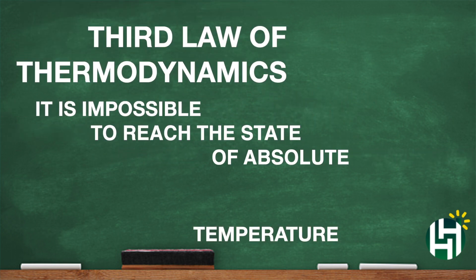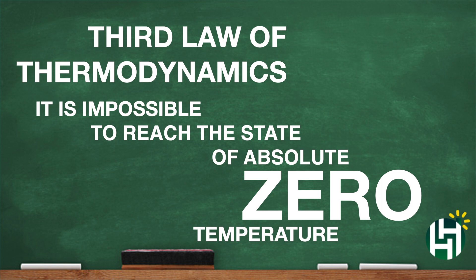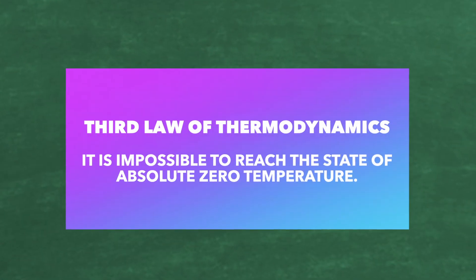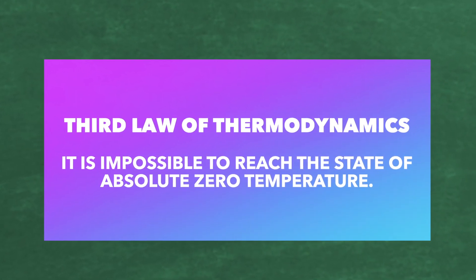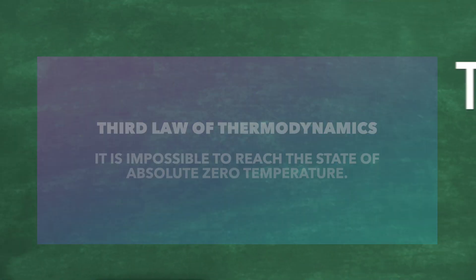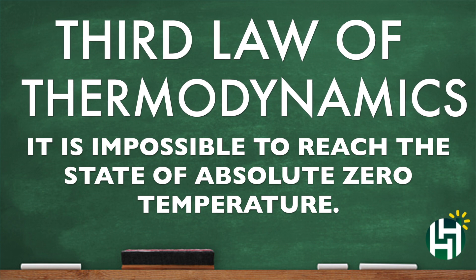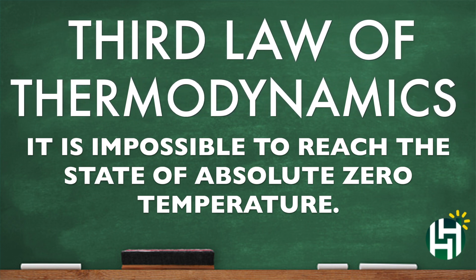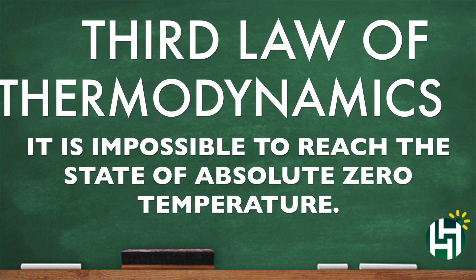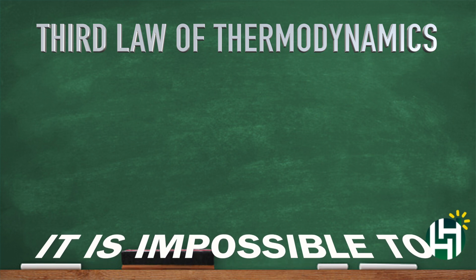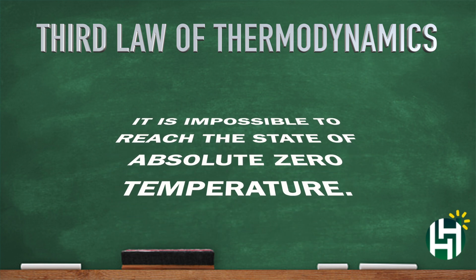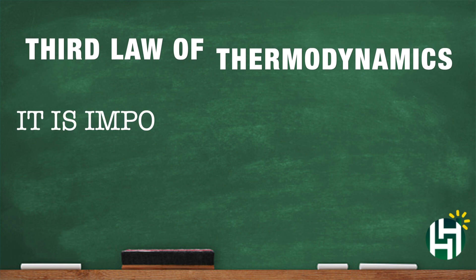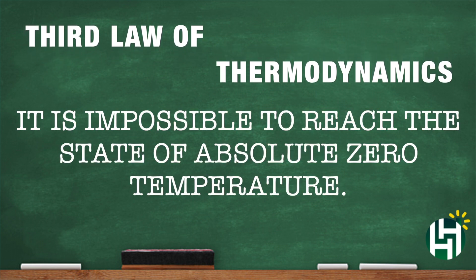The third law of thermodynamics explains that it is impossible to reach the state of absolute zero temperature. Absolute zero temperature. The third law of thermodynamics explains that it is impossible to reach the state of absolute zero temperature. Absolute zero! ZERO! The third law of thermodynamics explains that it is impossible to reach the state of absolute zero temperature.